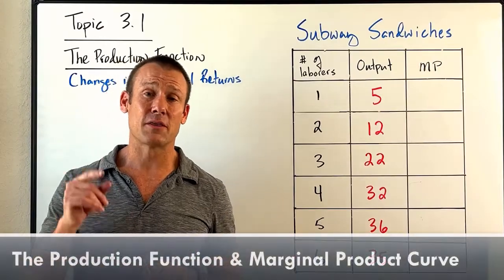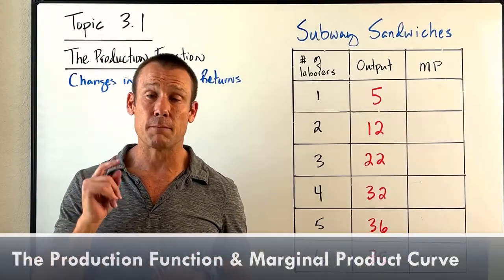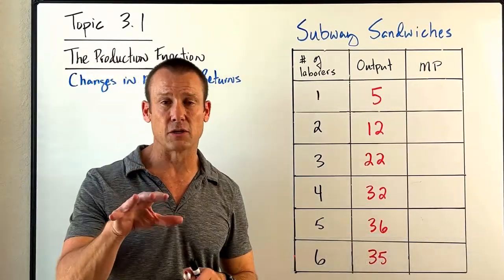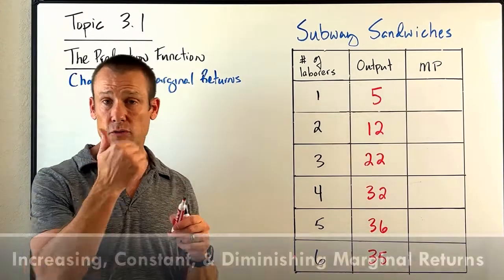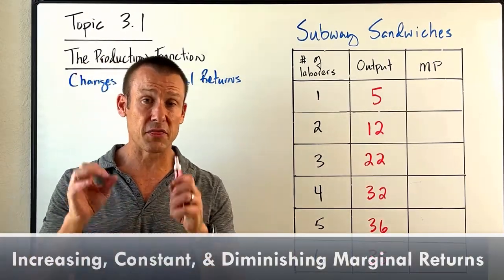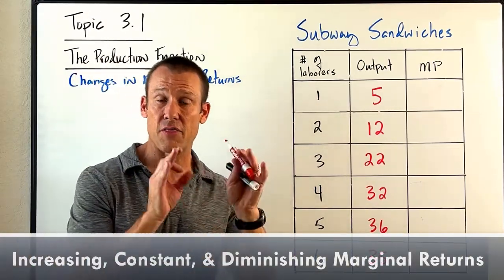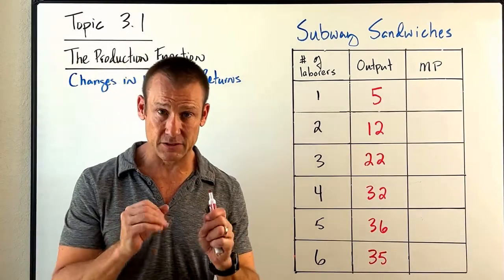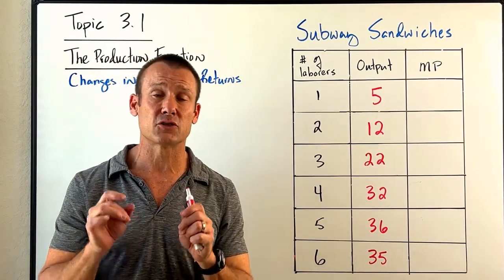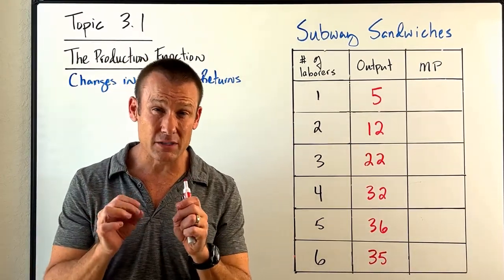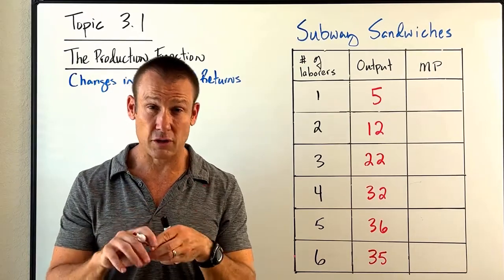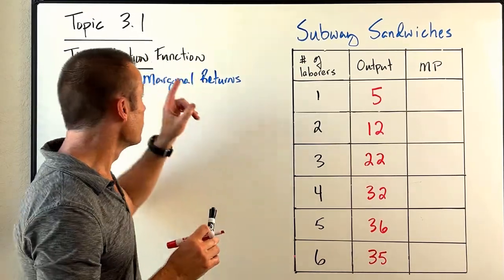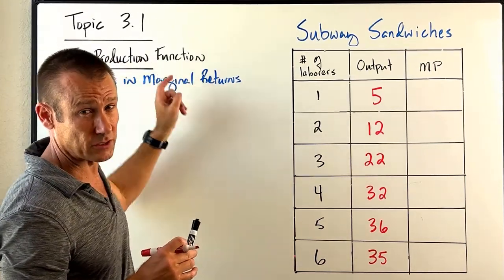This video is focused on the production function and more specifically changes in marginal returns. When you start studying this, you are probably studying theory of the firm — how a single firm makes decisions. To understand how a single firm makes decisions, you need to understand their cost structure. To understand their cost structure, you need to understand the production function.